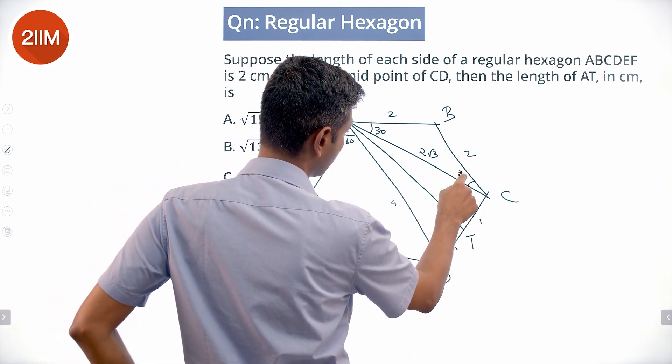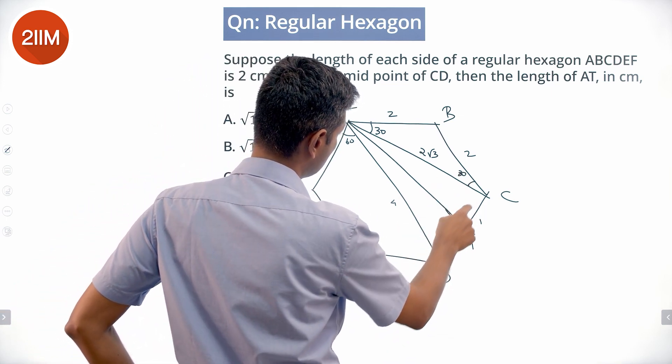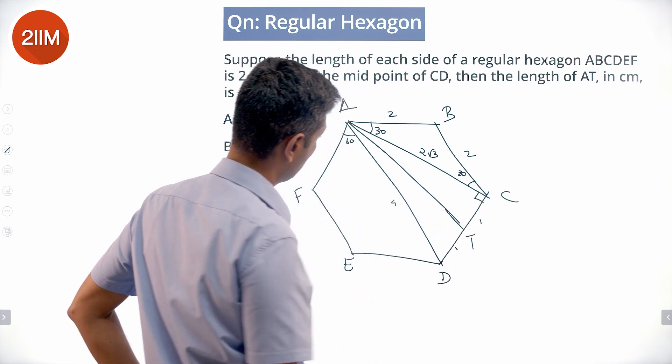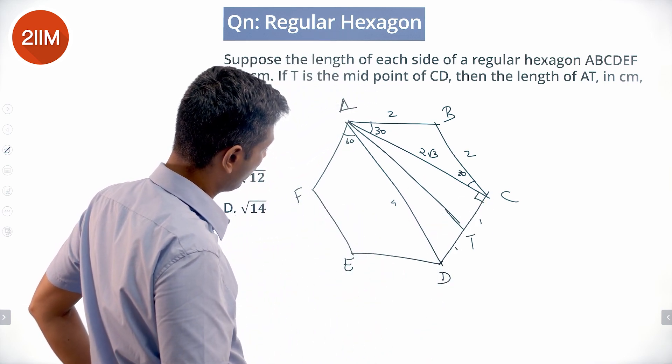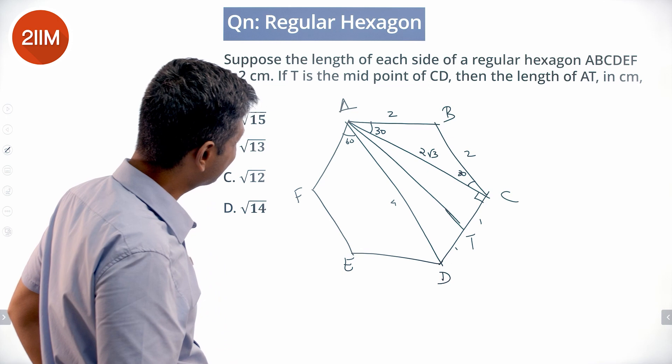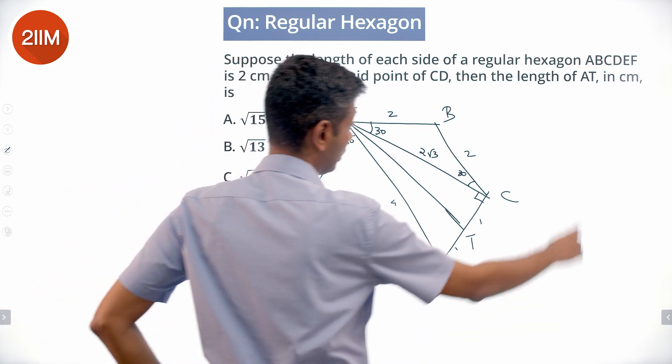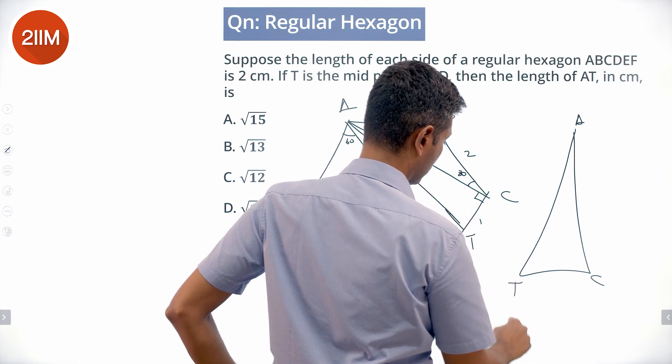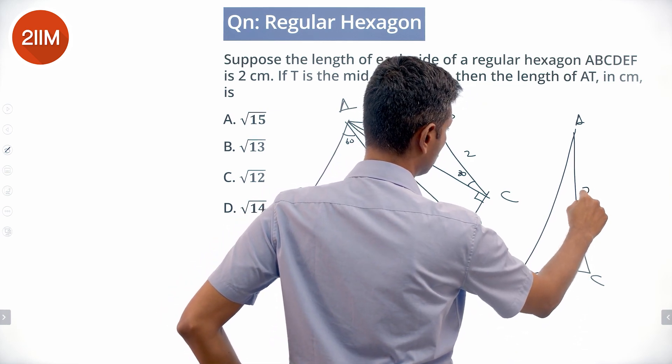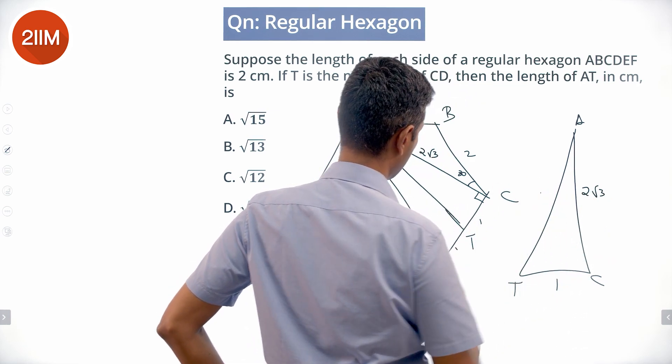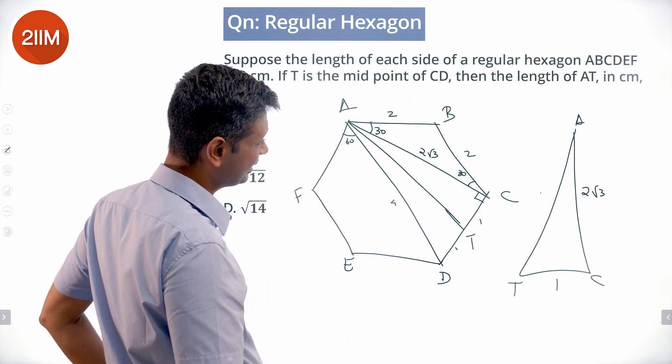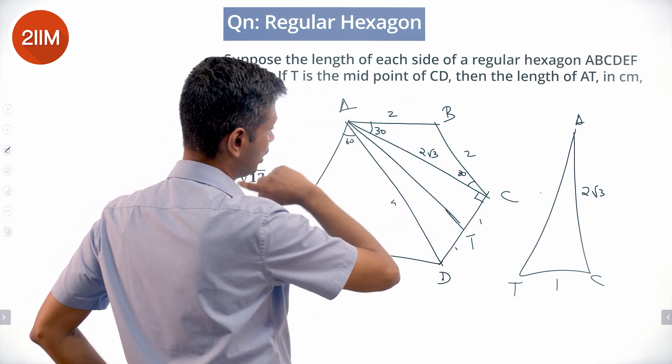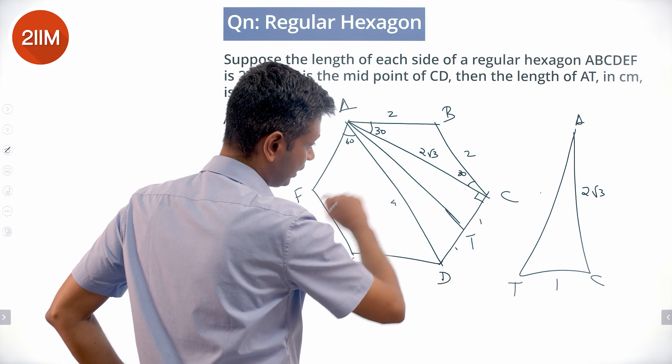This angle is 90. 2√3 and 1. So ACT is a right angle triangle. This is 1, this is 2√3. AT perhaps we can find, because this is 120 degrees internal angle. This is 30, 30, 120, 30, 90.